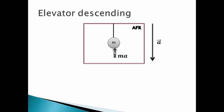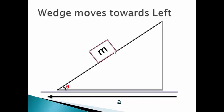The last one: wedge moves towards the left. This entire wedge is accelerating towards the left side. Hence it is our AFR. Therefore, a pseudo force will act on mass M towards the right side, equal in magnitude to M·A. So now you get the general idea about AFR, pseudo force, and its magnitude.